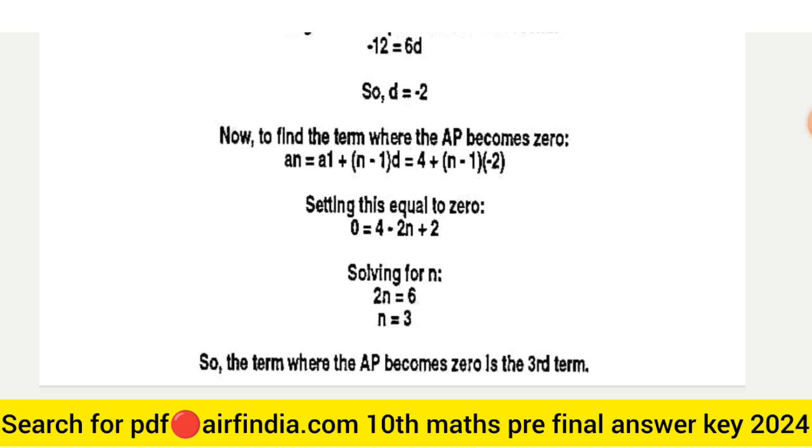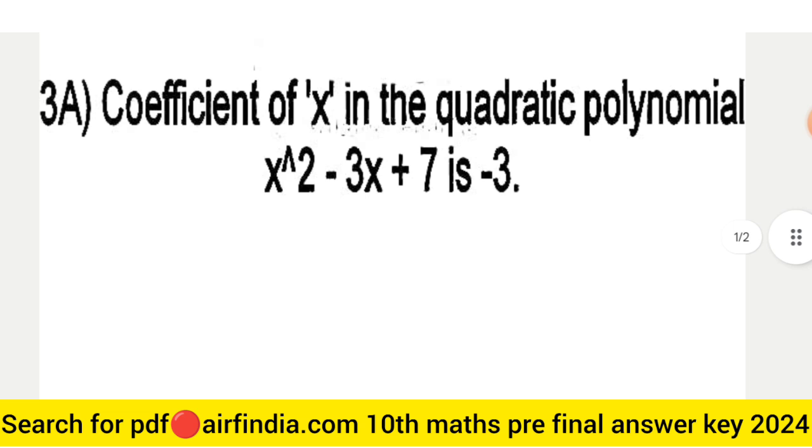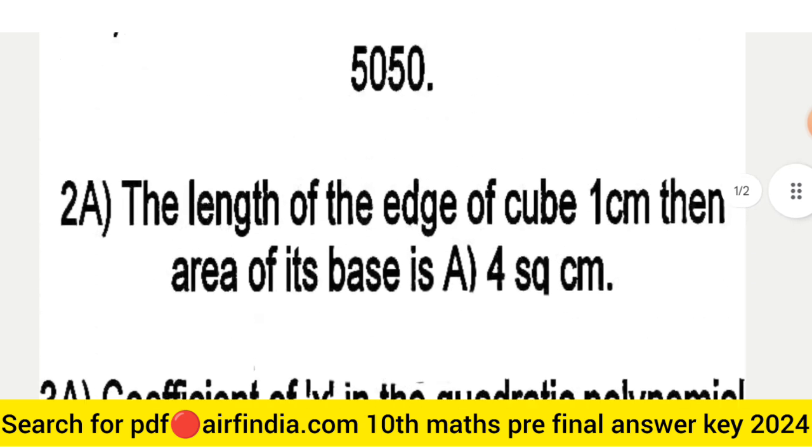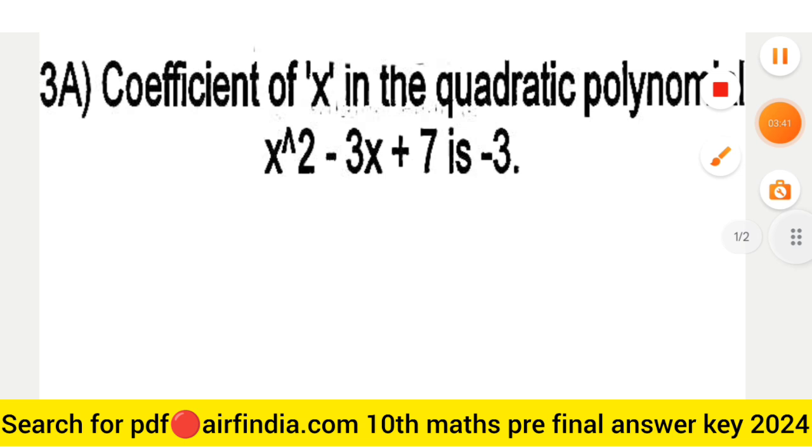Hence, the term where the AP becomes 0 is the third term. This is your full answer key of class 10th maths pre-final. Don't forget to subscribe our channel and hit the like button also.